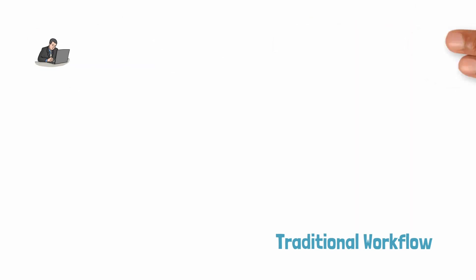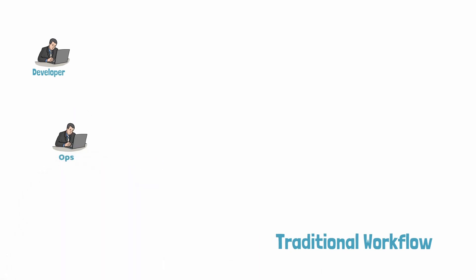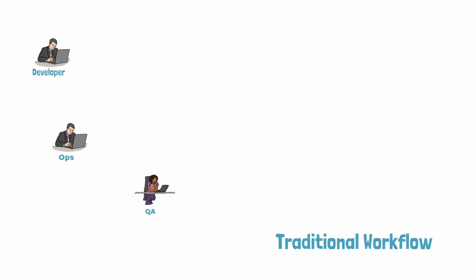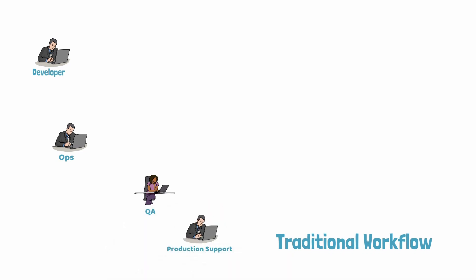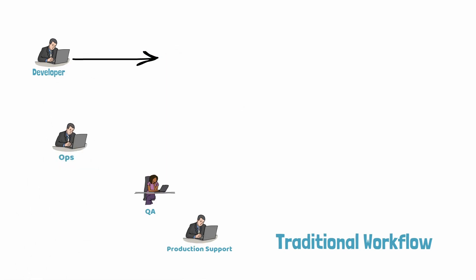Before we deep dive into CI, CD and modern development philosophies, let's have a look at the traditional software development lifecycle and what were the issues with it. Let's say we have multiple teams working in a project such as developer operations team, quality assurance team or testing team, and then we have a production support team which usually work on the production environments.